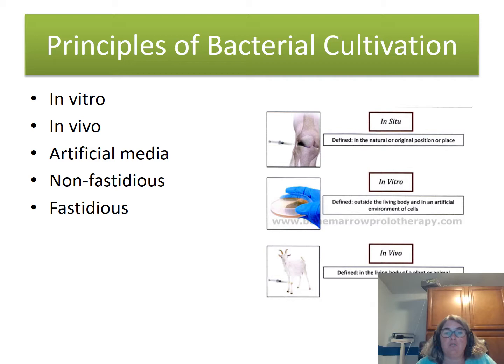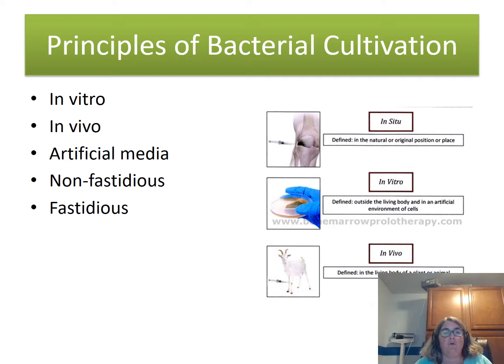Different bacteria have different nutritional needs, so we have a whole bunch of different types of media that have been developed to suit the needs of the various pathogens we're trying to target. Some bacteria are very fastidious or fussy, and some bacteria are non-fastidious, meaning they'll pretty much live if you give them the basic needs — right atmosphere, enough protein and sugar available. In the laboratory, we focus on being able to grow up not just the majority of non-fastidious organisms, but also those fastidious ones that we don't want to miss.